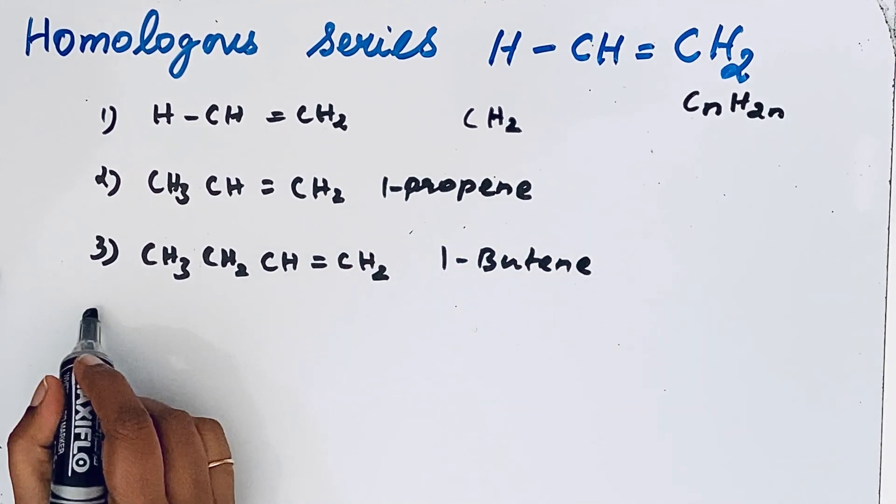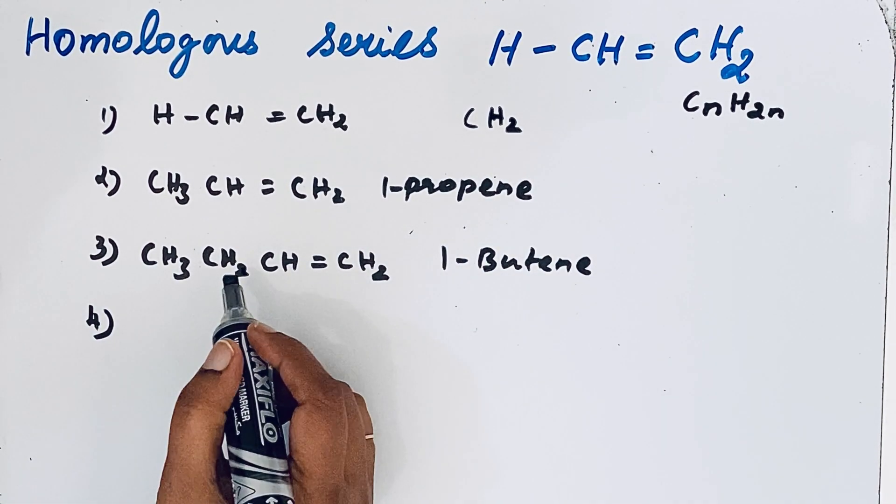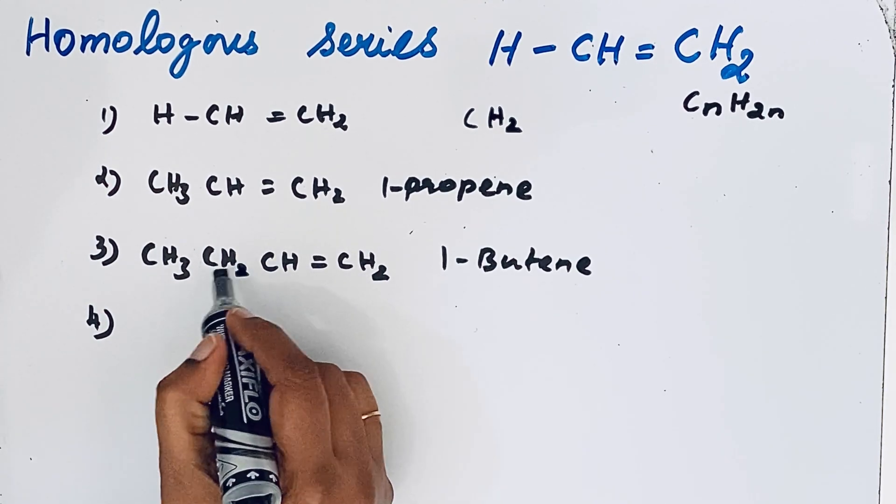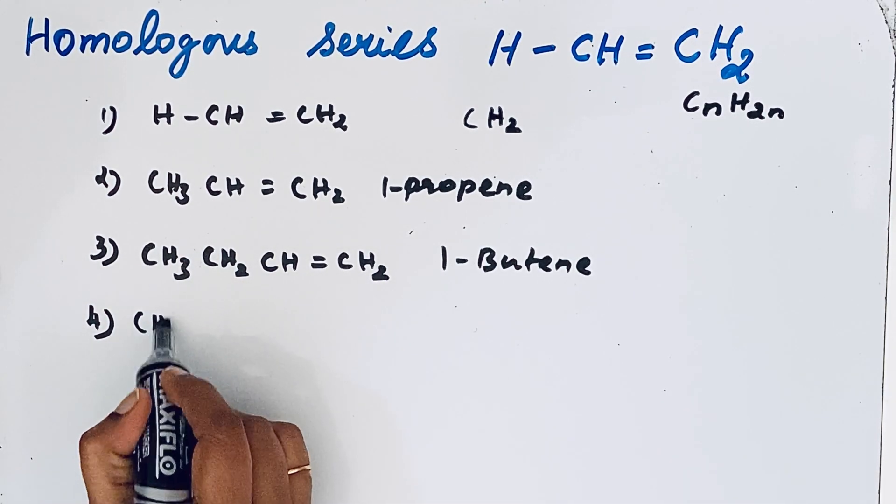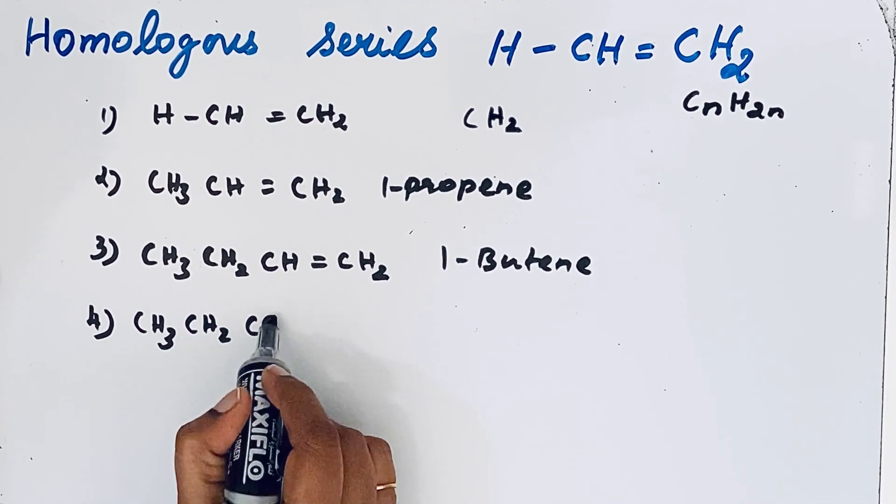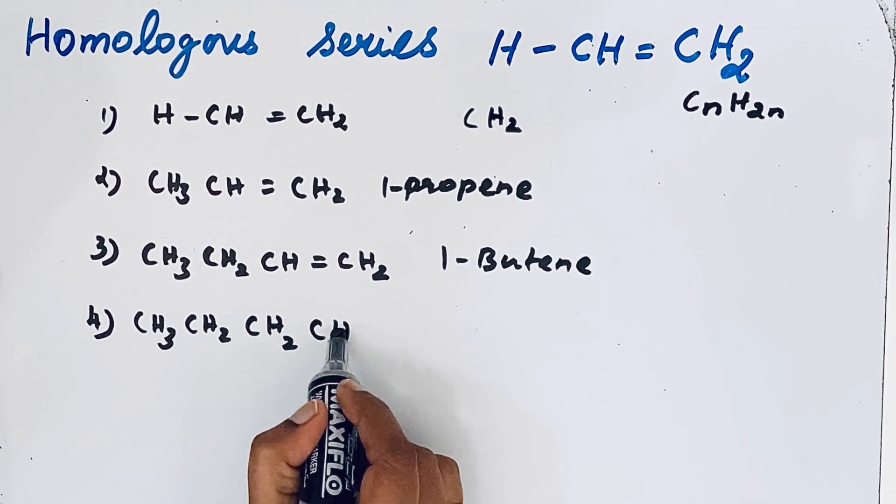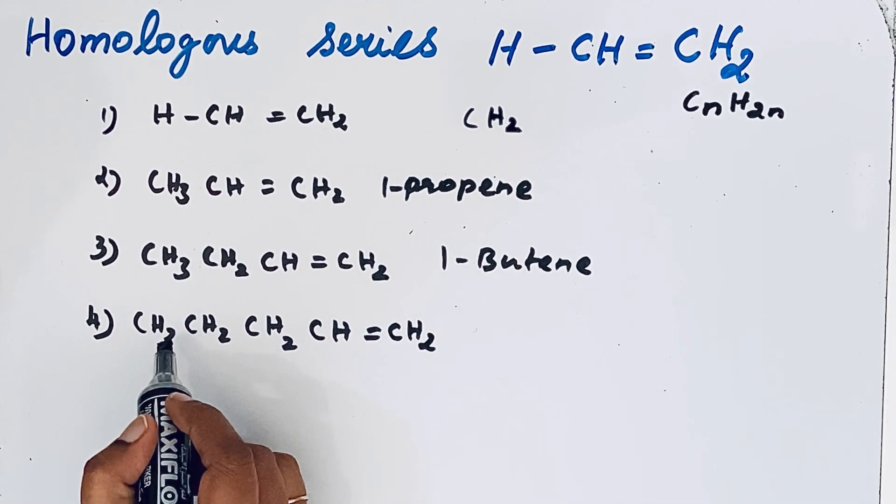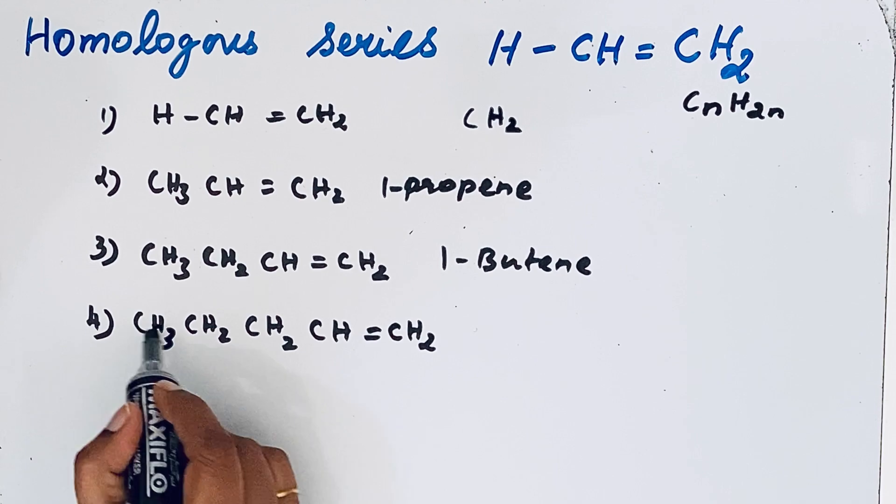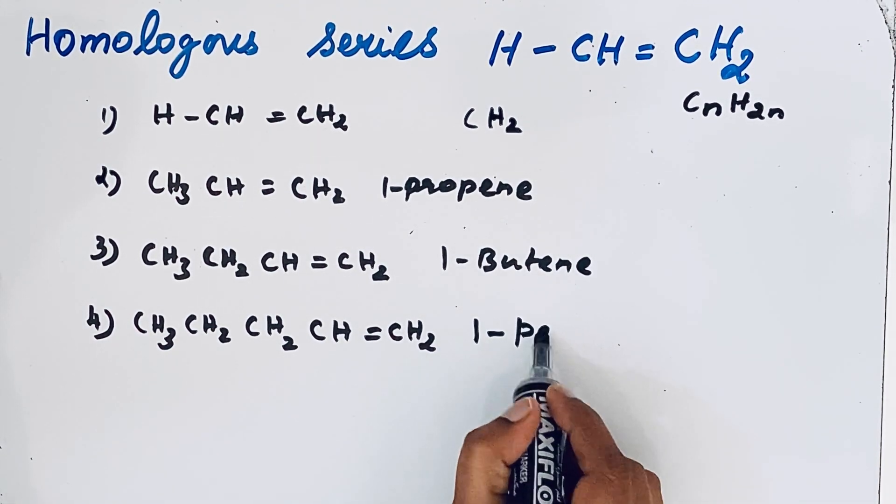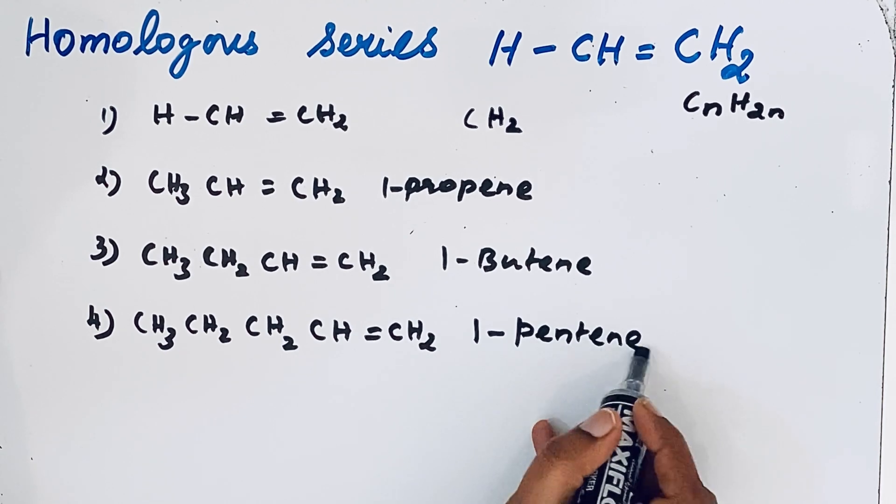This one is propene. Then the fourth homologous series, again you are going to add that CH2 group. You can add it here next to the CH3 group: CH3-CH2-CH2-CH=CH2. What is the name? How many carbon atoms are here? One, two, three, four, five. So it is one-pentene.